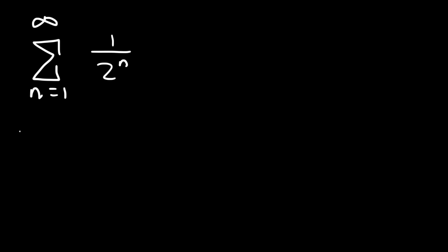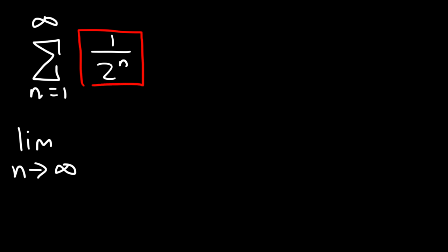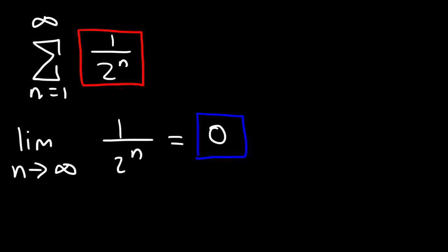Let's try one more example. Use the divergence test to see if the series diverges. Take the limit as n approaches infinity for a sub n, which is 1 divided by 2 to the n. As n approaches infinity, 2 to the n approaches infinity, and 1 divided by a large number approaches 0. So according to the divergence test, the series may converge or it may diverge, because the limit equals 0. If the limit didn't equal 0, the series would definitely diverge.